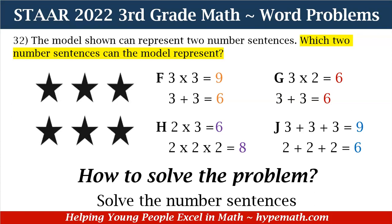For F: three times three equals nine, and three plus three equals six. For G: three times two equals six, and three plus three equals six. For H: two times three equals six, and two times two times two equals eight. For J: three plus three plus three equals nine, and two plus two plus two equals six.